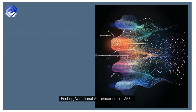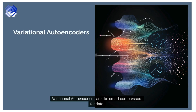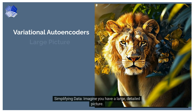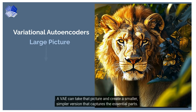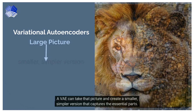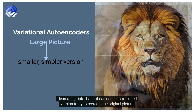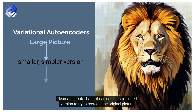First up: Variational Autoencoders, or VAEs. Variational autoencoders are like smart compressors for data. Imagine you have a large, detailed picture — a VAE can take that picture and create a smaller, simpler version that captures the essential parts. Later, it can use this simplified version to try to recreate the original picture.